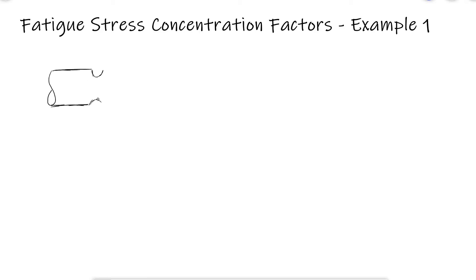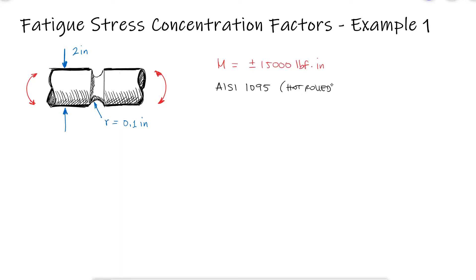A 2 inch diameter non-rotating solid round bar that has a groove cut with a radius of 0.1 inches is subjected to a repeated bending load that causes a moment that varies from minus 15,000 to plus 15,000 pound inches. The bar is made of hot rolled AISI 1095 and the groove is of course machined. What is the factor of safety for infinite life?